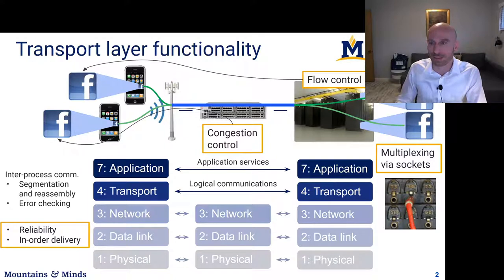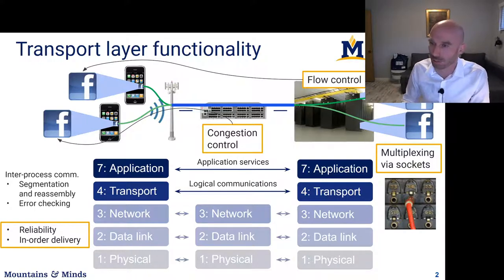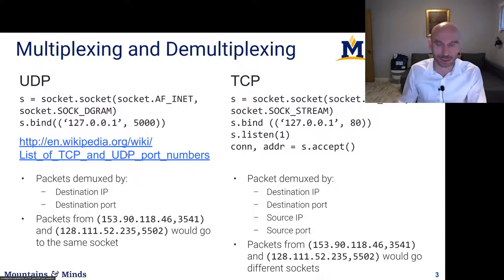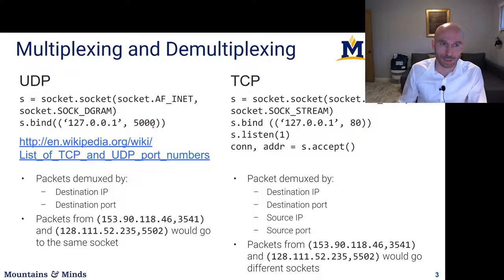That's an overview of transport layer functionality. Now let's look at how different transport layer protocols provide these features. At a high level, we'll talk about UDP and TCP. They use different port numbers corresponding to different applications — for example, port 80 corresponds to HTTP, and port 5000 is above the 1024 mark, which means it can be used by anyone.